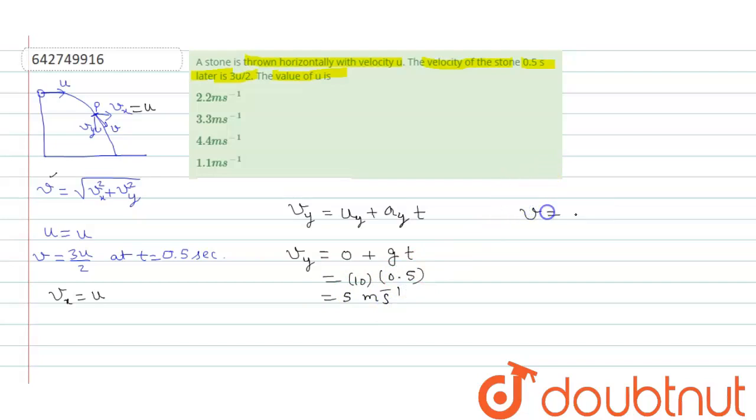Now we have to find v, which equals the square root of vx squared plus vy squared. v is 3u/2, which equals the square root of u squared plus 5 squared. Squaring both sides, it becomes 9u²/4 equals u² plus 25.